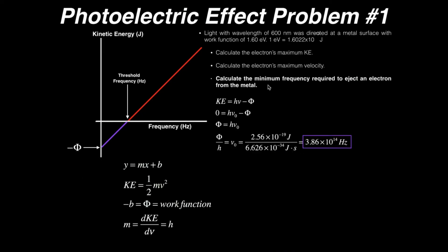Now let's calculate the minimum frequency required to eject an electron from the metal — the threshold frequency. It occurs where the kinetic energy is zero. So we set kinetic energy equal to zero: 0 equals h times the threshold frequency nu naught, minus the work function. Adding the work function to both sides, the work function equals h times nu naught. Solving for the threshold frequency, we divide both sides by h: threshold frequency equals work function divided by Planck's constant.